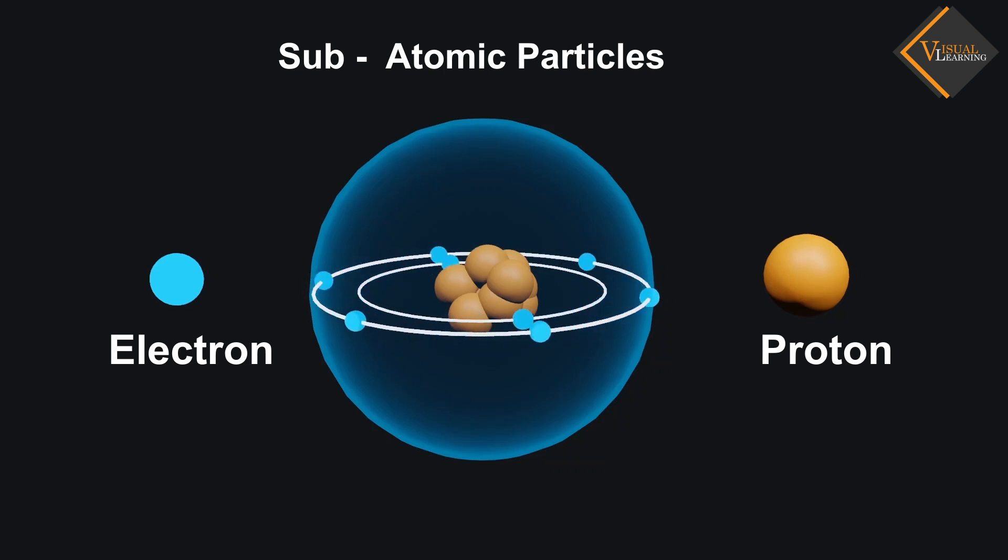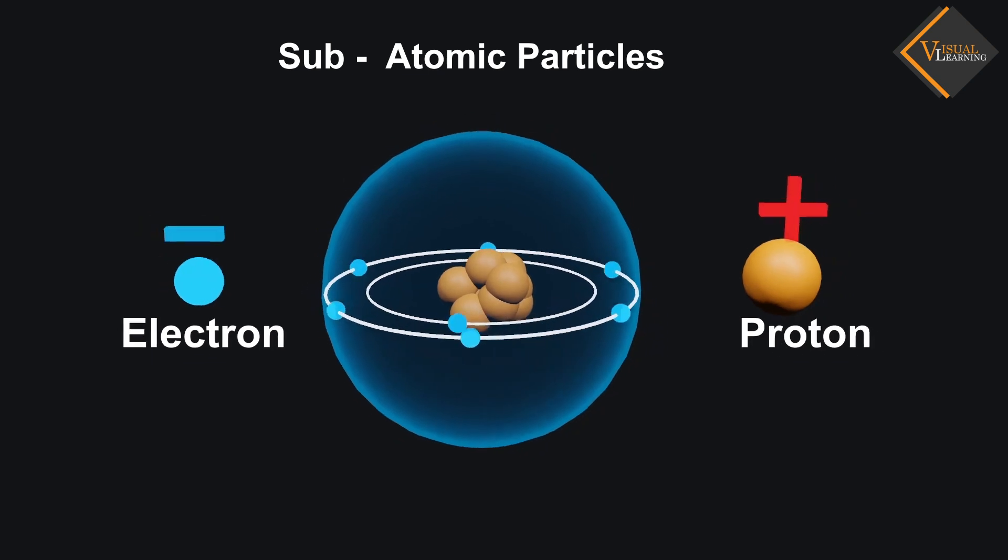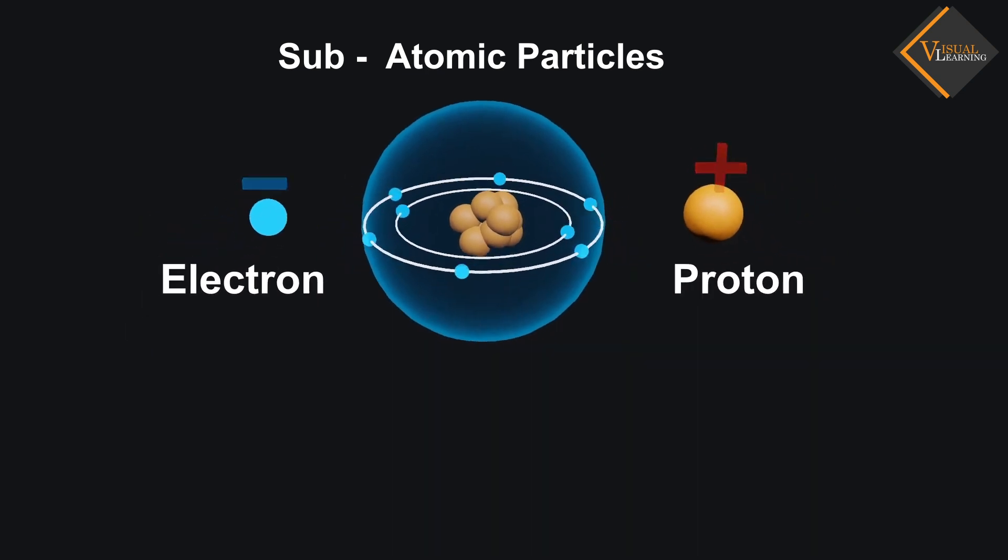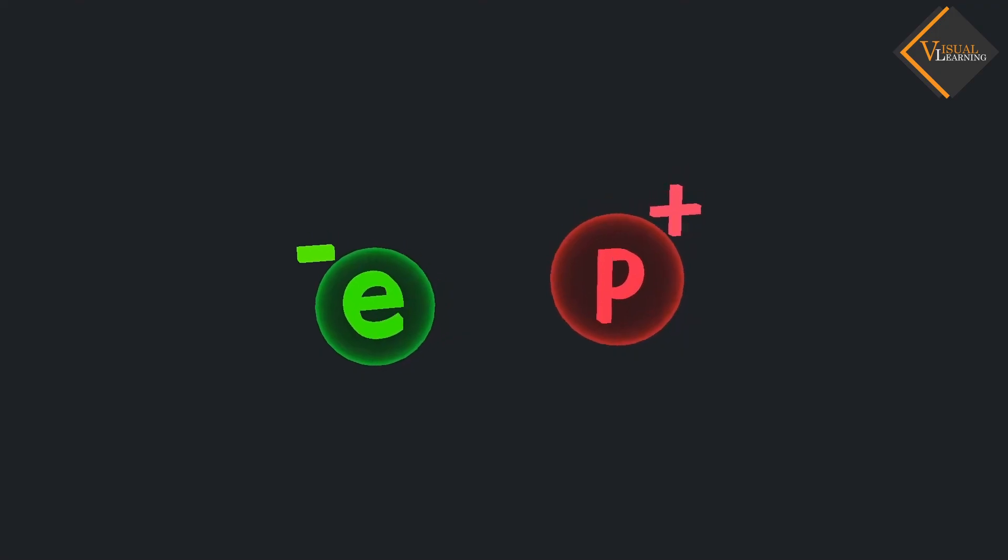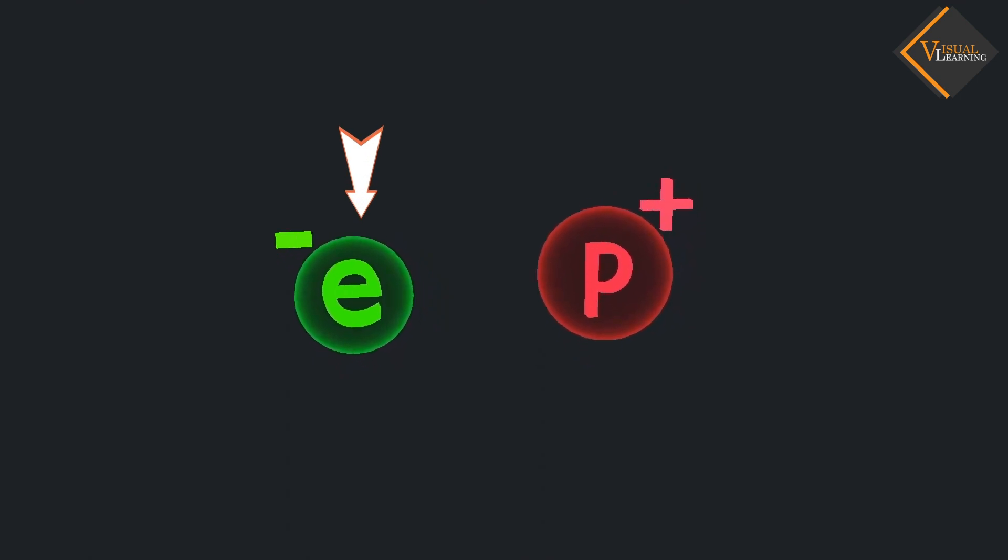Electron has negative charge on it. It was also found that proton has 2,000 times mass as that of electron. In general, an electron is represented as E negative, and a proton is represented as P positive.